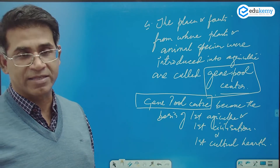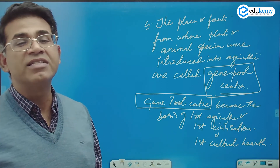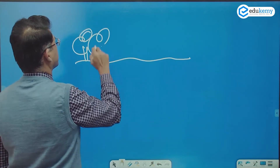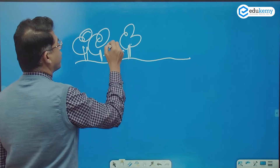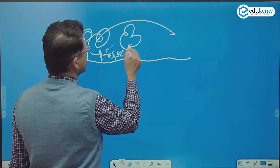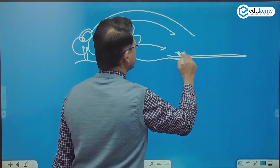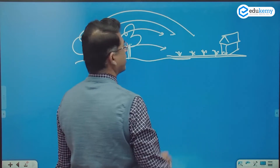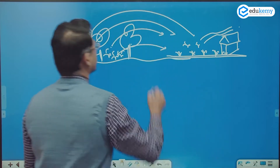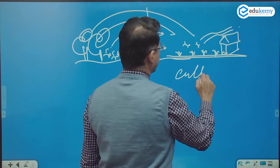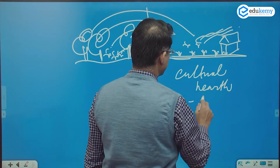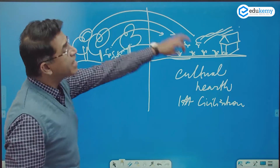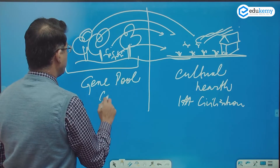Hearth actually means fire — the fireplace. So cultural hearth represents the fire of homes. Basically, this is land here and this is the forest. From the forests, people take the species — they take the life forms, some plants — and here they begin agriculture. When they have agriculture, they build their first settled life, with roads and trades. These places are called cultural hearths, the first civilizations. And the places from where the species are taken are called the gene pool centers.